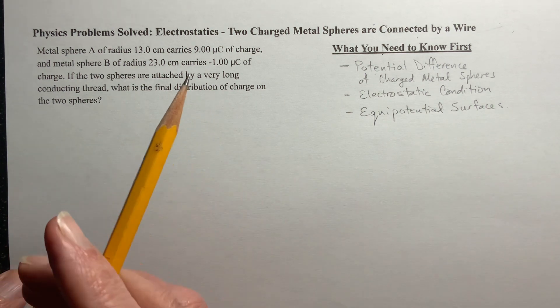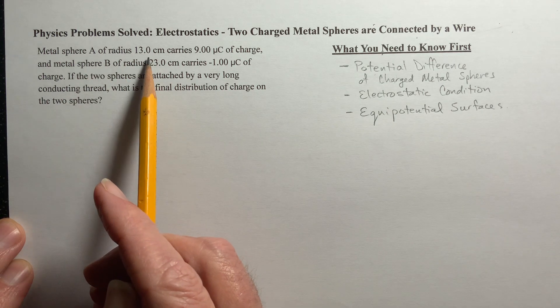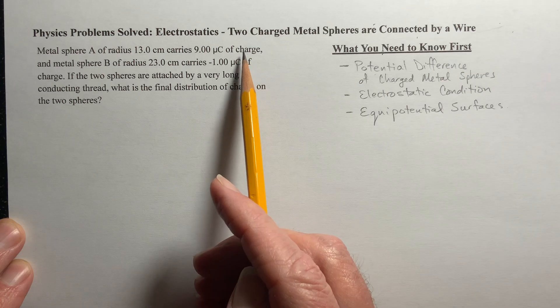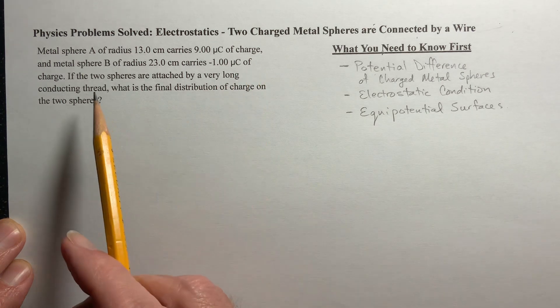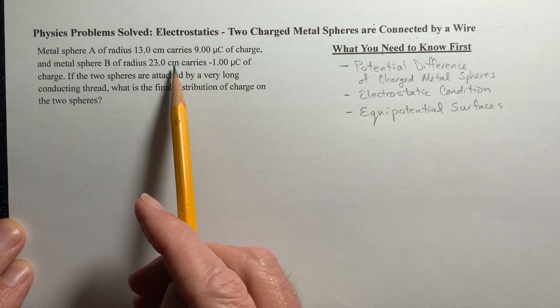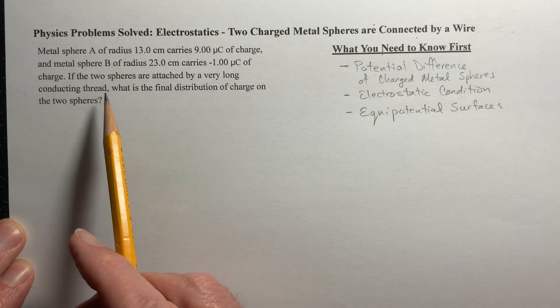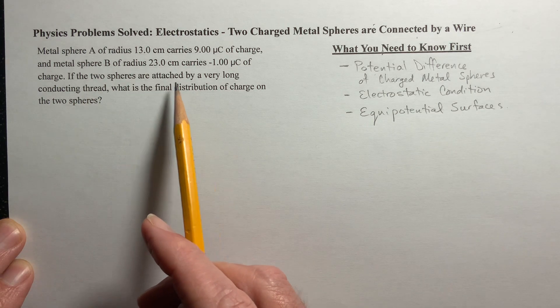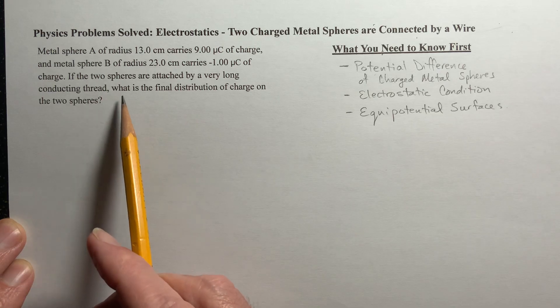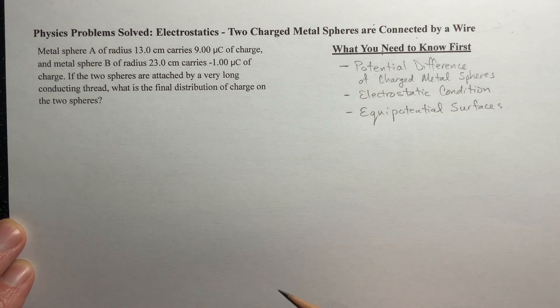Now let's read through the problem. Metal sphere A of radius 13 centimeters carries 9 microcoulombs of charge, and metal sphere B has a radius of 23 centimeters and carries negative 1 microcoulomb of charge. If the two spheres are then attached by a very long conducting thread, what is the final distribution of charge on the two spheres?